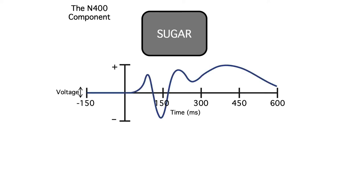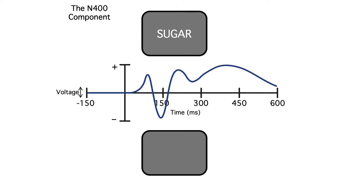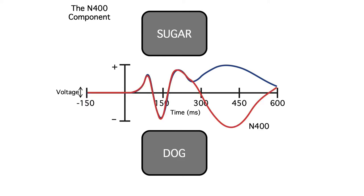This is the ERP waveform elicited by the word 'sugar' at the end of the sentence. Time zero is the onset of the final word in the sentence, and we're looking at the brain's response to that word. Of course, these are artificial data, not the real thing. We might also have a sentence like the one shown at the bottom of the screen: I take my coffee with cream and dog. If the meaning of the last word doesn't fit well with the rest of the sentence, you get a very different brain response.